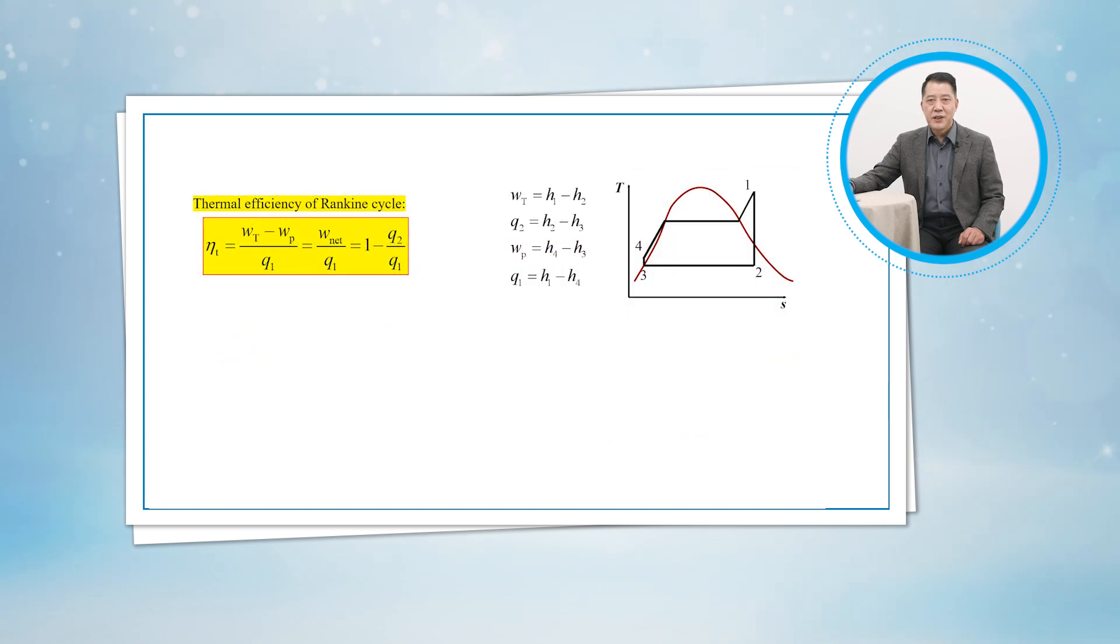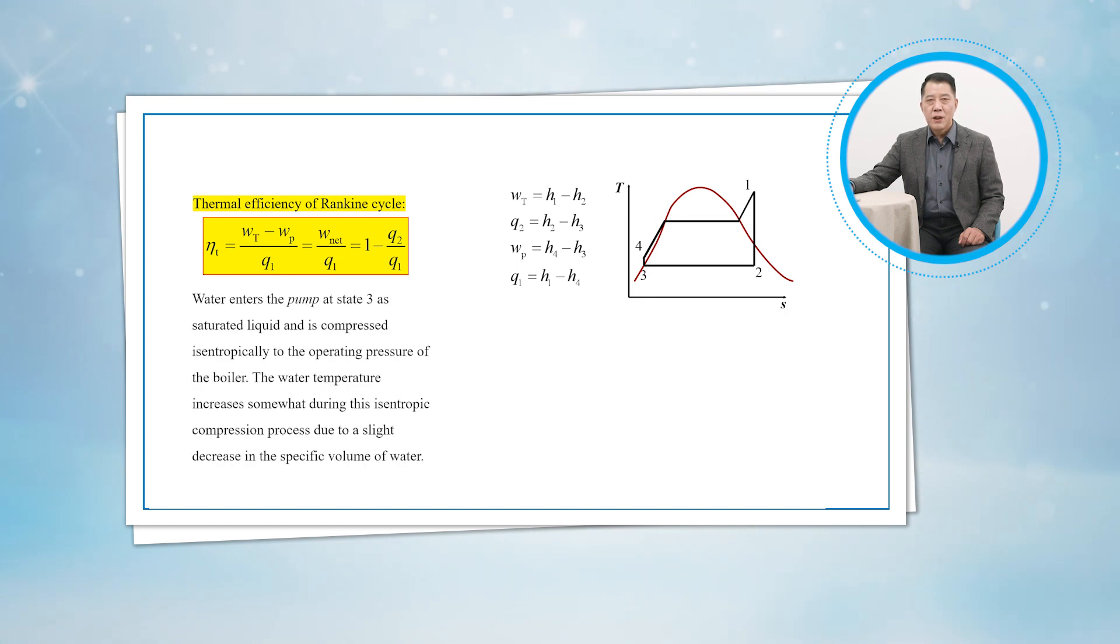By definition, the thermal efficiency of the Rankine cycle is... Water enters the pump at state 3. It is saturated liquid and is compressed isentropically to the operating pressure of the boiler.